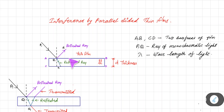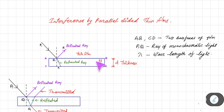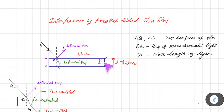Here in the figure, a thin film is shown and we are talking about interference of light. This is a thin film where AB is one surface and CD is another surface. These two surfaces form a very thin film — remember its thickness is very small compared to the wavelength of light. The film has refractive index mu and the surrounding medium is air.